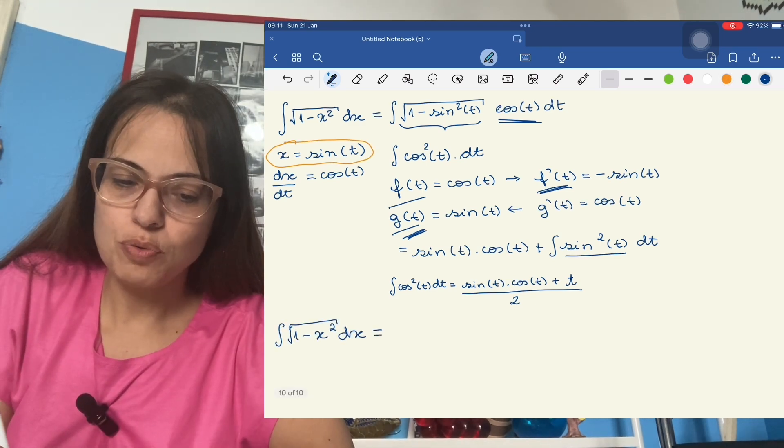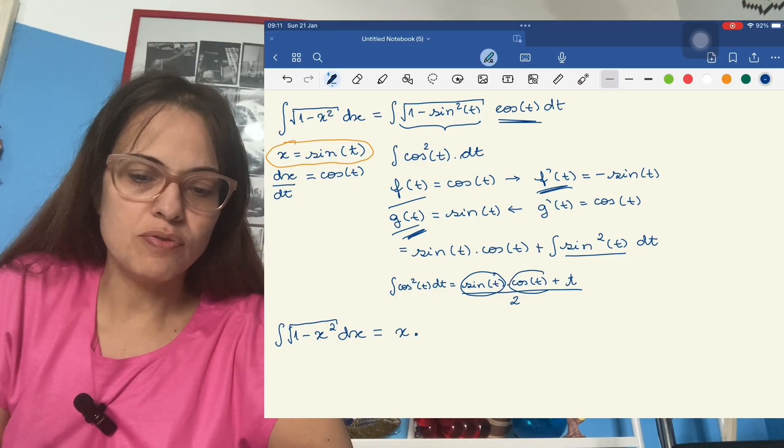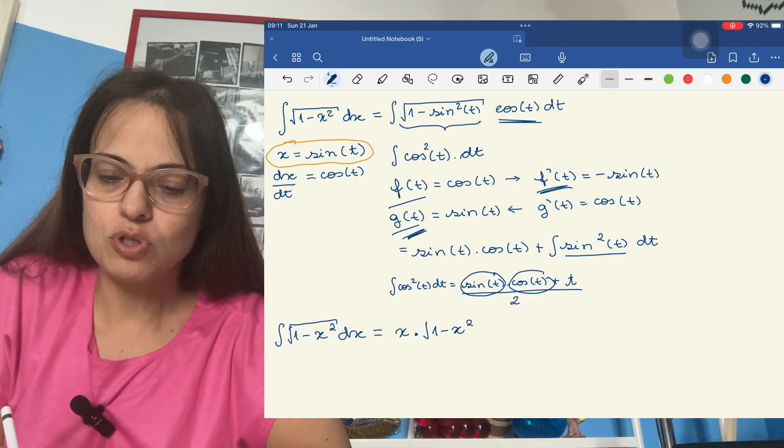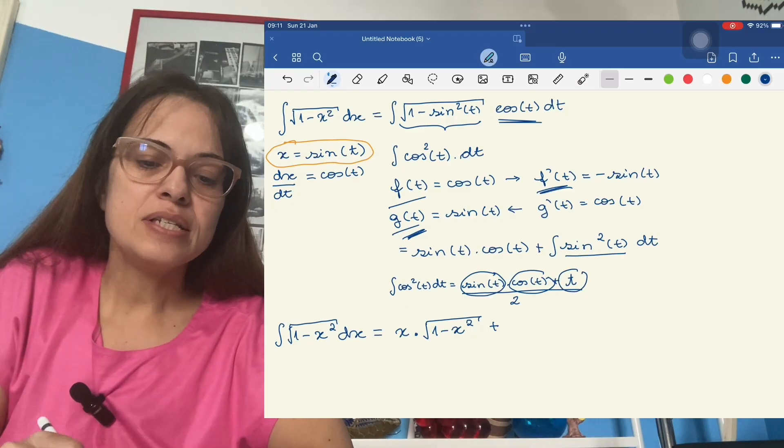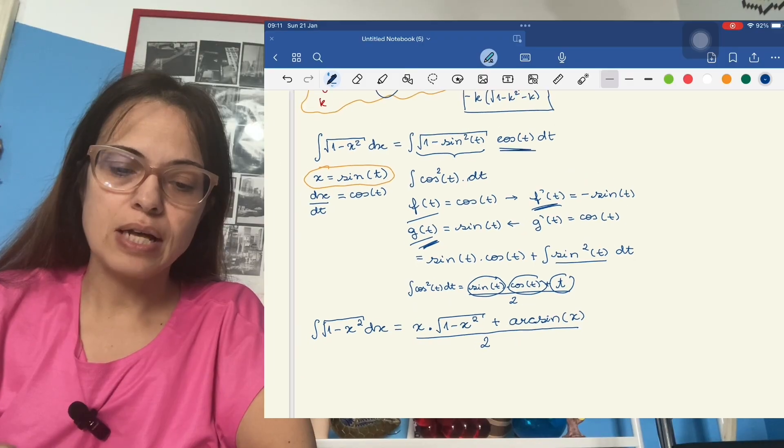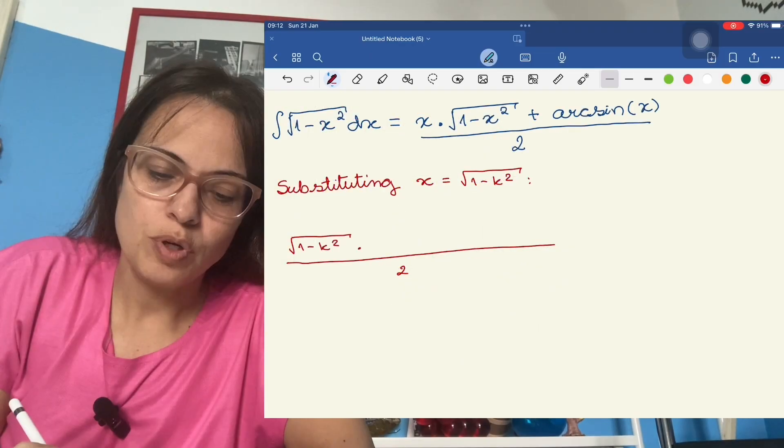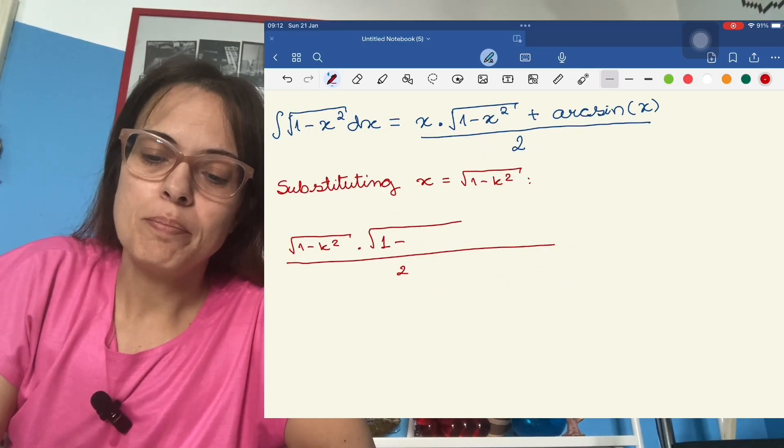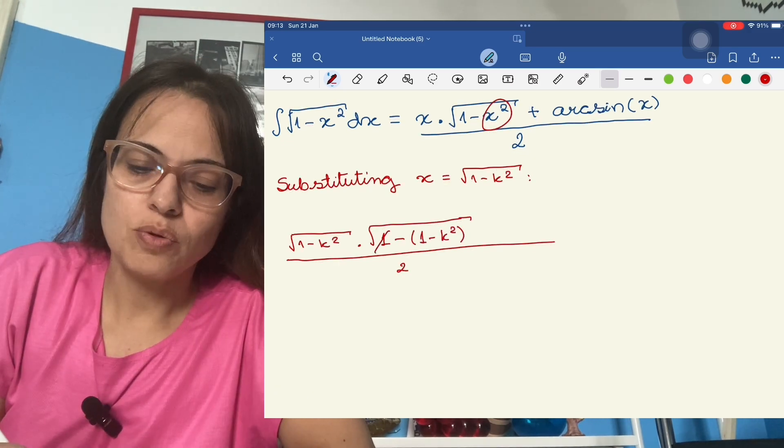Now let's substitute back with our X equals sine of T. So our integral is going to be X times, well, cosine of X is going to be the square root of 1 minus X squared, right? We've used this substitution before in this problem. Plus T, T is the arc sine of X. That's the solution to this integral. But now we need to go back and put in the limits of integration. So when we do that, we have 1 minus X squared here. But X squared is just 1 minus K squared. So these ones are going to cancel out.